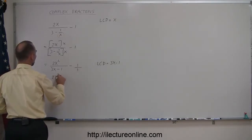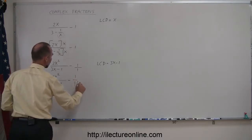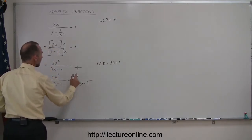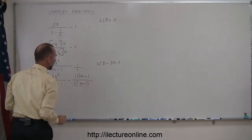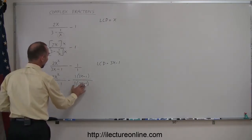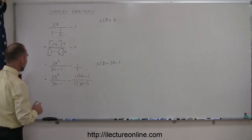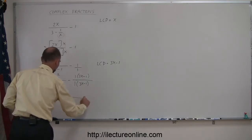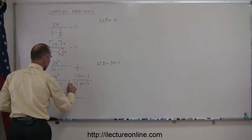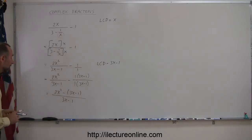So this now becomes 2x squared divided by 3x minus 1, minus 1 over 1. I must multiply the denominator by 3x minus 1 so that the denominator becomes common, and of course I must do the same with the numerator. Since the two denominators are the same — 1 times 3x minus 1 is 3x minus 1 — I can now write the whole thing over a single denominator of 3x minus 1, and here I still have the 2x squared, and here I have minus the quantity 3x minus 1. I like to write it like that so I don't make any mistakes on the signs.